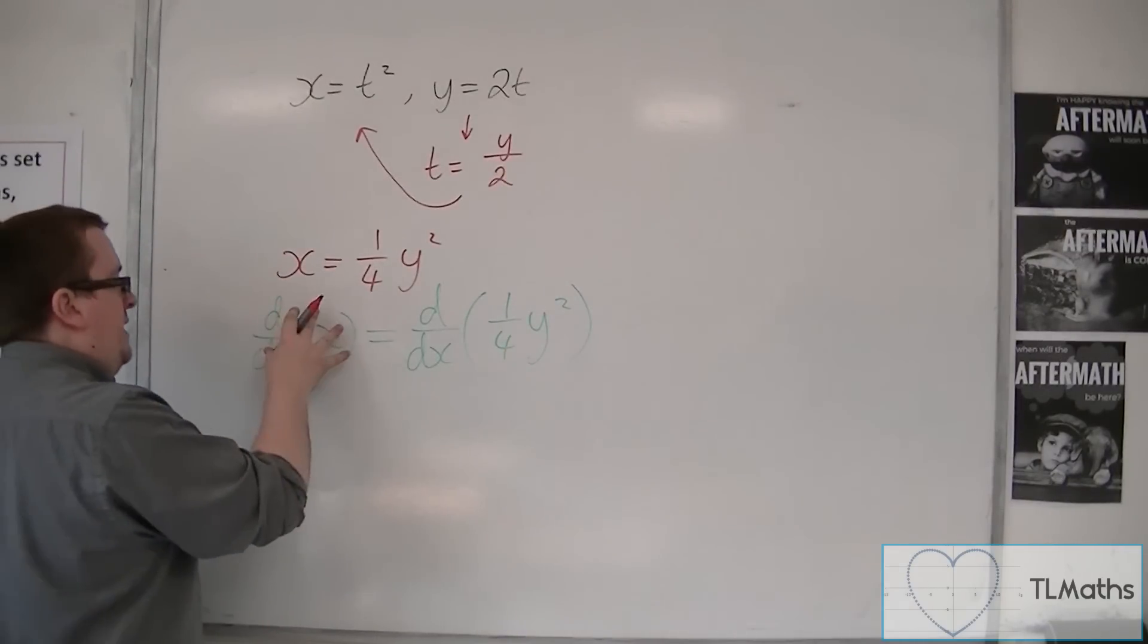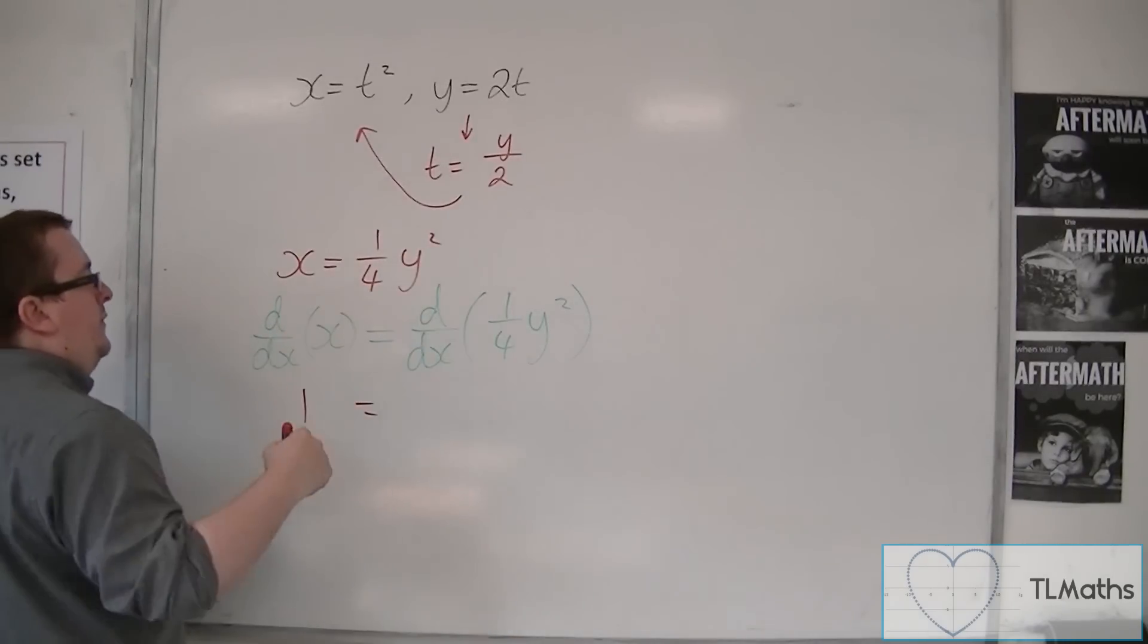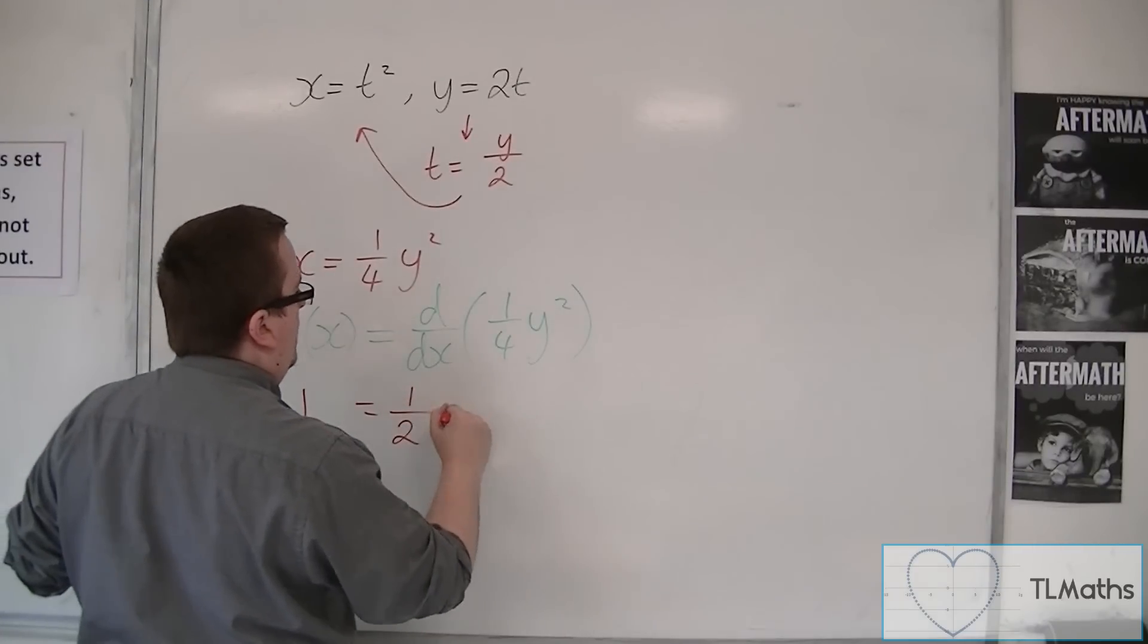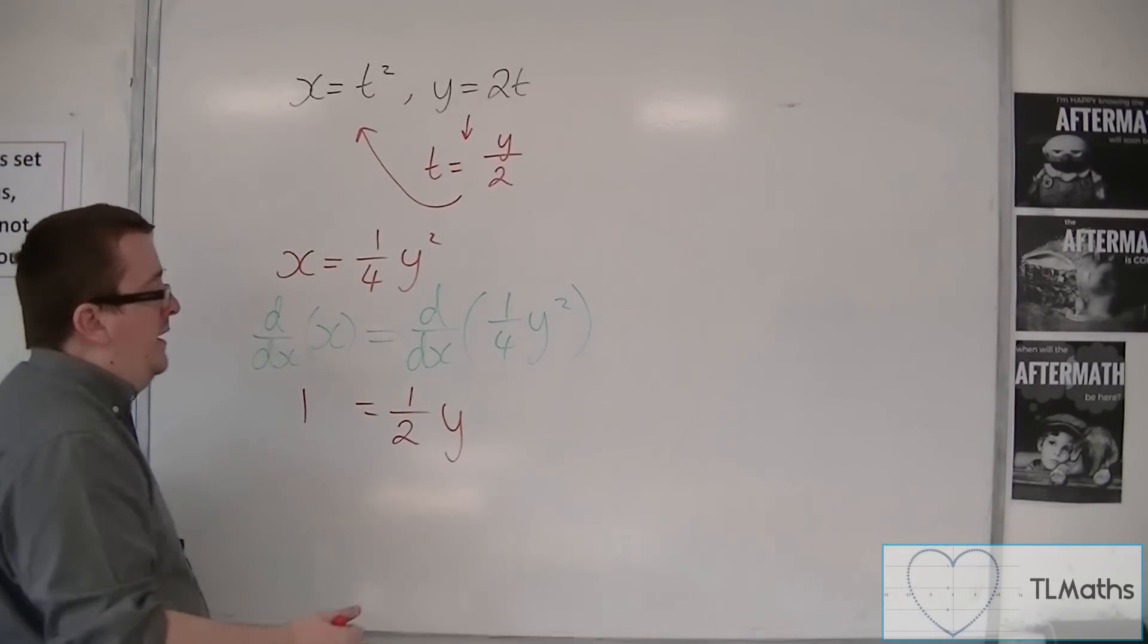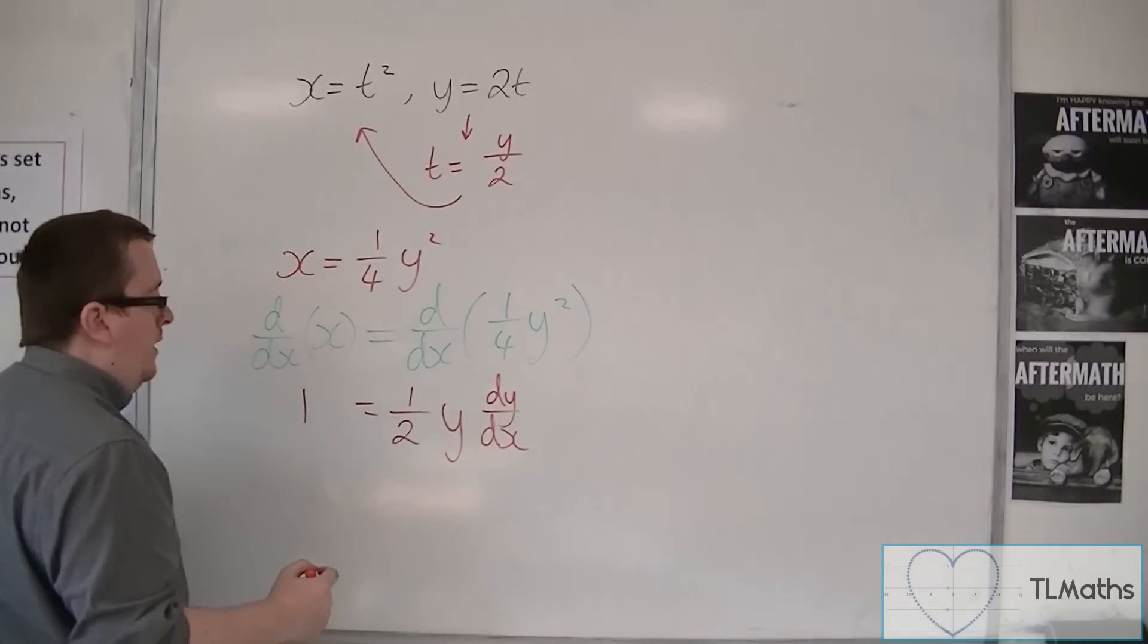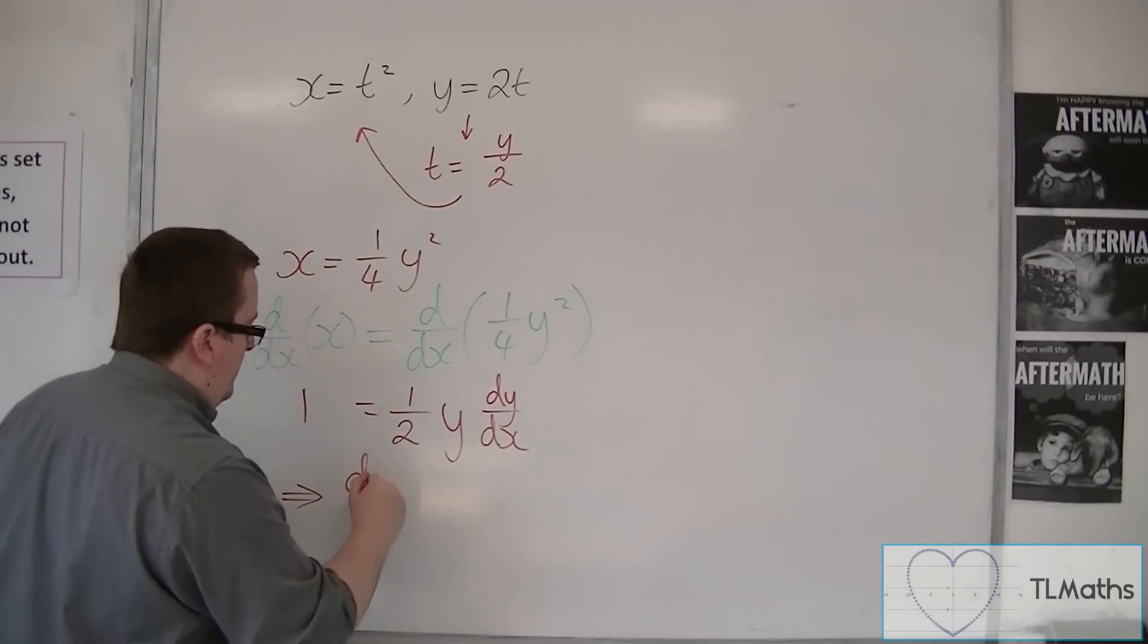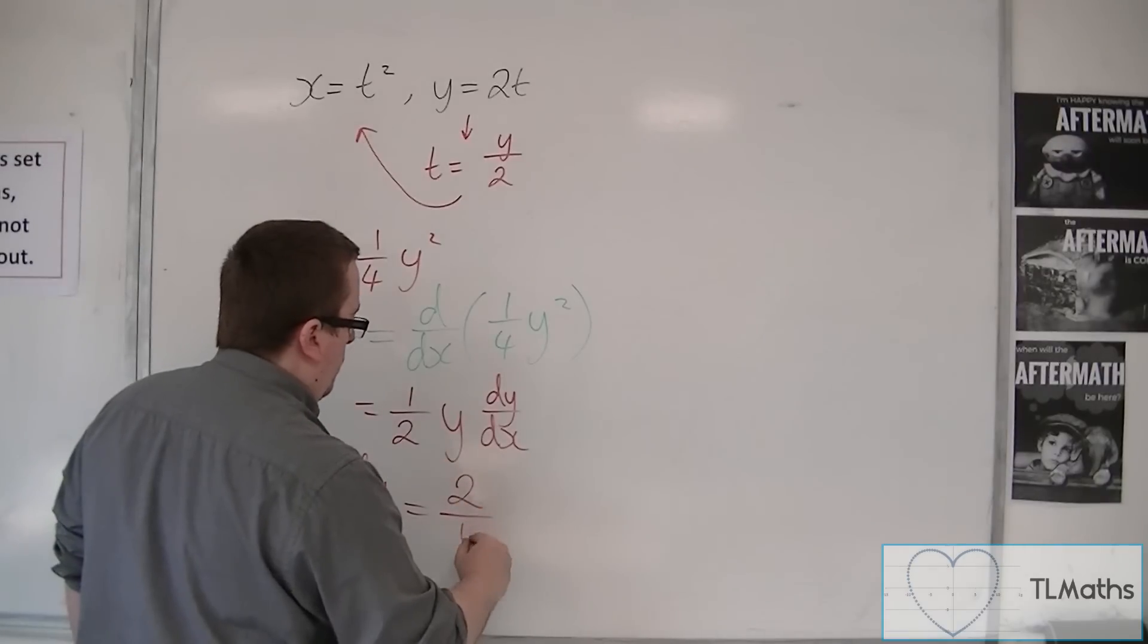So the derivative of the left-hand side is just 1. The derivative of the right-hand side, the 2 comes down to the front, multiplies with the quarter, so we've got a half y. And then because we're differentiating with respect to x, we get this dy by dx. And then what I can do is multiply both sides by 2 and divide both sides by y. So dy by dx is 2 over y.